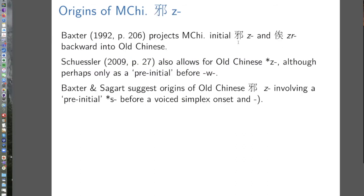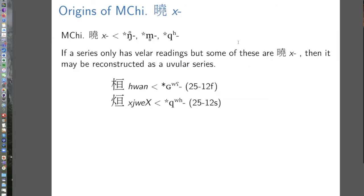Here's an example: we have a series with the gamma initial and the X initial — not a problem in terms of the Xie Xiong hypothesis, since they are already homoorganic. But Baxter and Sagart don't want to reconstruct X and gamma into Old Chinese when there's already machinery available to explain where they come from. It's a simpler explanation to take such series back to uvulars. The result is there is no X in Old Chinese — that's their conclusion. We've managed to get rid of X.